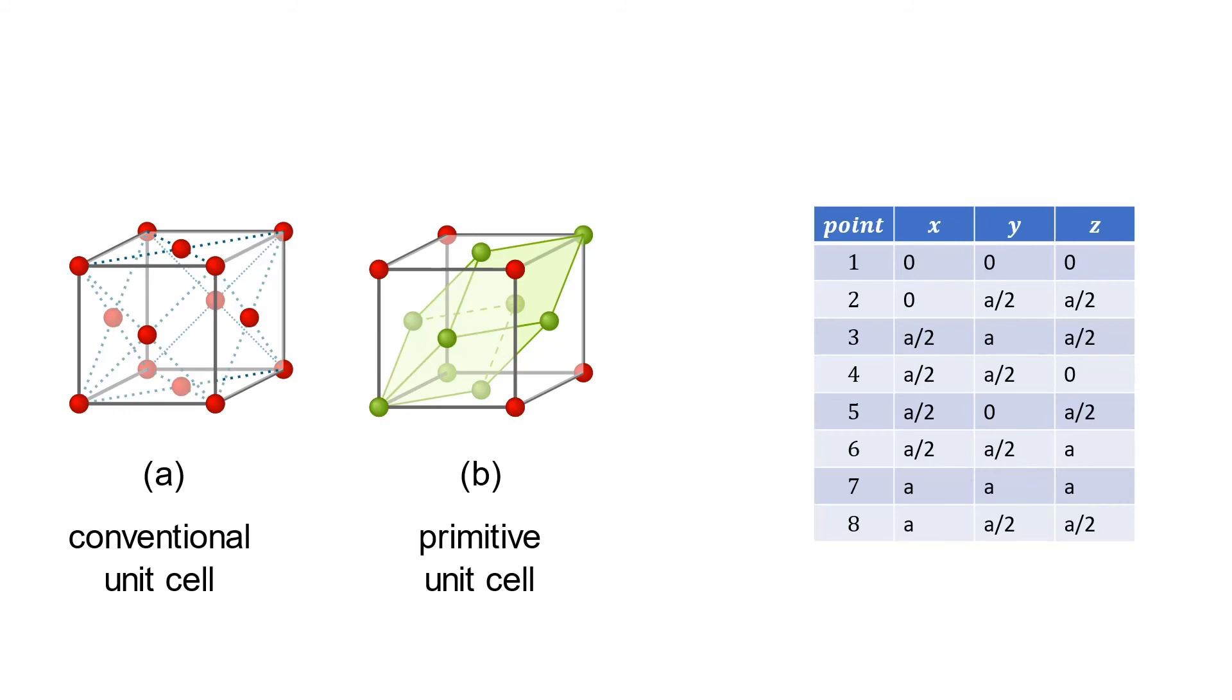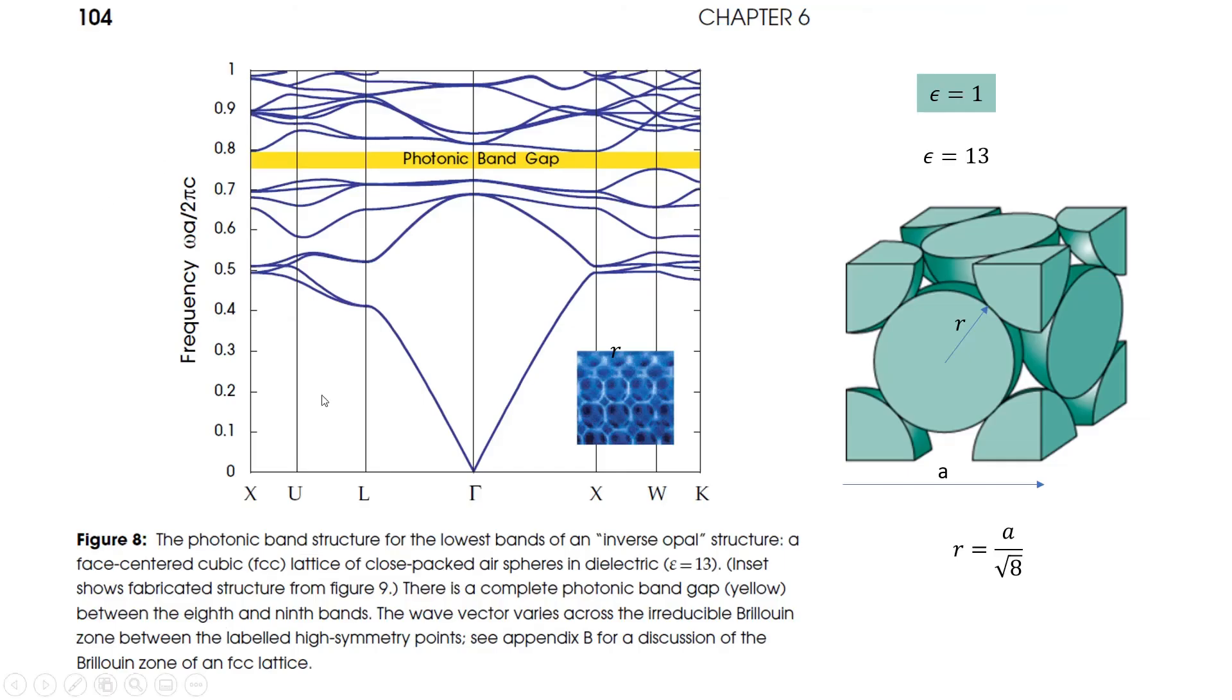What we should implement in COMSOL is a primitive unit cell, because if you implement the whole conventional unit cell, this means you already take four primitive unit cells into account. So you will see some band folding in your dispersion diagram and you will never get a dispersion diagram similar to this. You will have some band folding, so for example these two bands and these two bands come in the middle here.